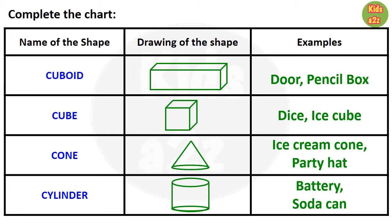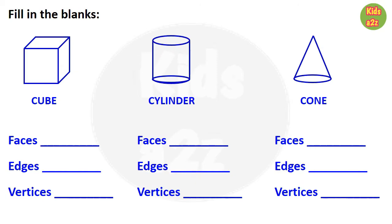They can write any other examples also. Here in this worksheet, pictures of some shapes are given and kids need to write how many faces, edges, and vertices are there for each shape. Like for cube: a face is a single flat surface, so a cube has six faces which are all squares — there are six flat surfaces or faces. Now an edge is a line segment between faces, so a cube has 12 edges; and a vertex is a point formed where three edges meet, so a cube has eight vertices.